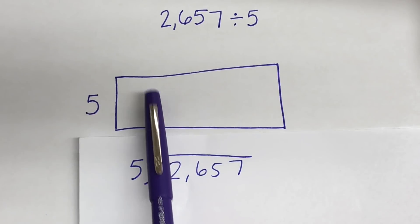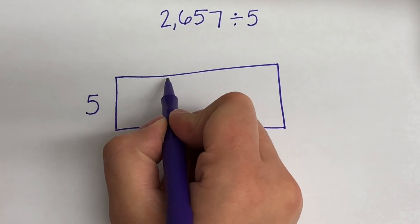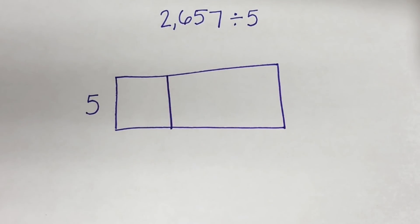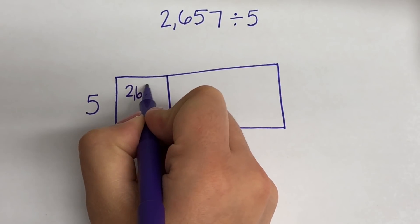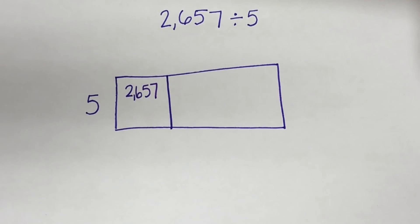Now we are going to start with our whole dividend, 2,657. And that is going to be our first box. So you are going to create your first section. And on the top, you are going to write 2,657. This is our starting point.